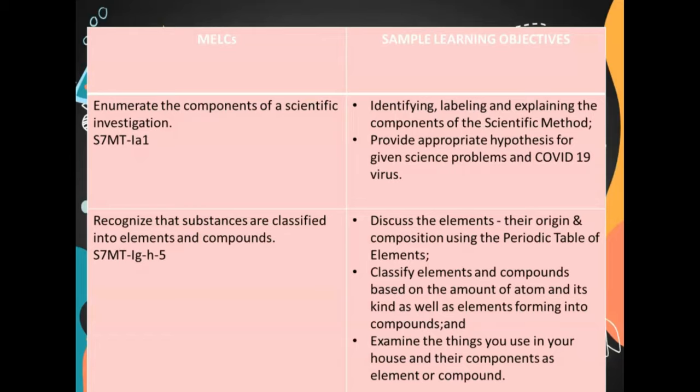Additional learning objectives: Provide appropriate hypotheses for given science problems and COVID-19 virus. Recognize that substances are classified into elements and compounds. Discuss the elements, their origin, and composition using the periodic table of elements. Classify elements and compounds based on the amount of atoms and their kind, as well as elements forming into compounds. Examine the things you see in your house and identify their components as element or compound.